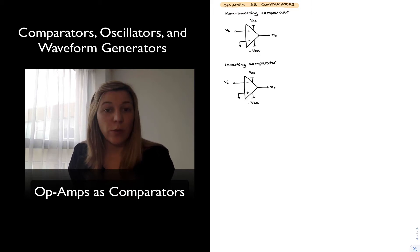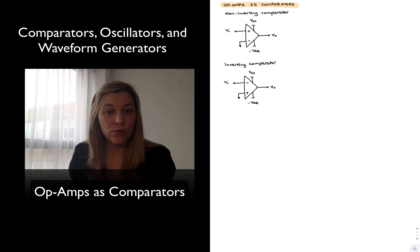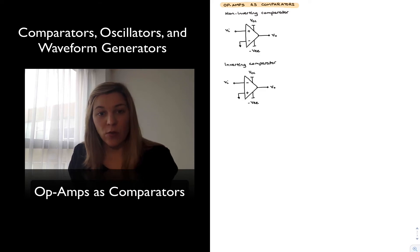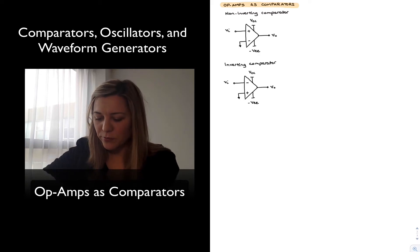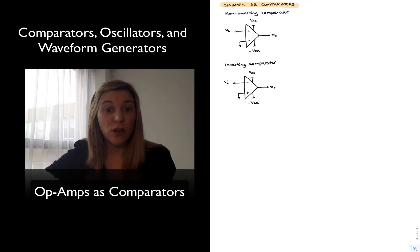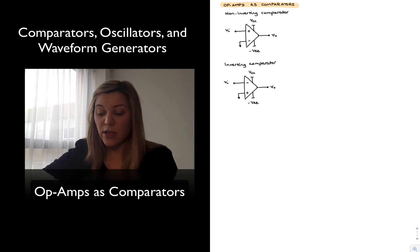If we operate an op-amp in open loop — say we tie one of the inputs to zero or ground and apply an input signal to the other input — when that signal goes slightly higher than zero, the output will go towards the positive saturation level, and when it's slightly lower than zero, the output will trend towards the negative saturation level. If we apply the input signal to the non-inverting input terminal, we get a non-inverting comparator.